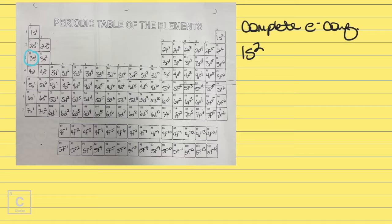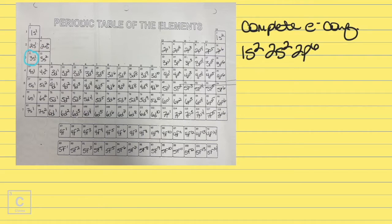So we've taken care of 1s. What comes next? 2s. Again, it's got to be full — 2. After 2s comes 2p. I didn't write 2s¹ and 2s² separately; we lumped them all together. We're going to keep going through the sublevels until we get where we want to go. P has got to be full, so we're going to go ahead and put a 6. After 2p — that's what we're looking for: 3s¹, we're done.